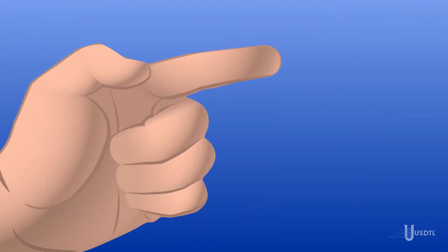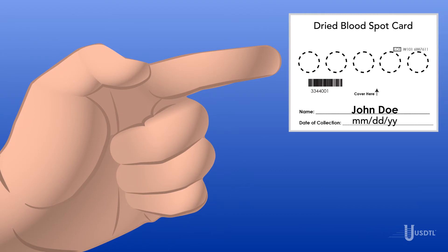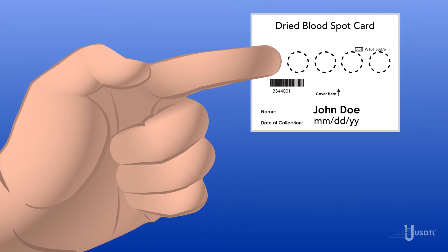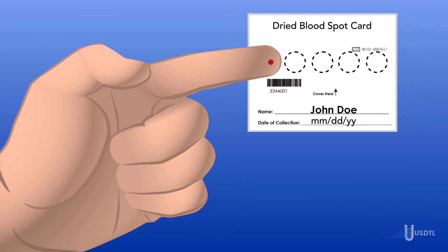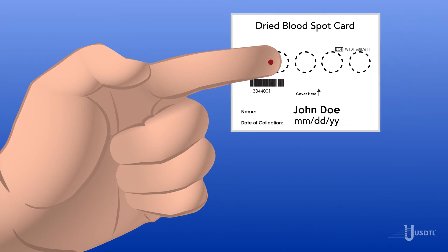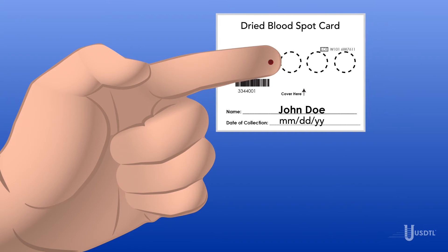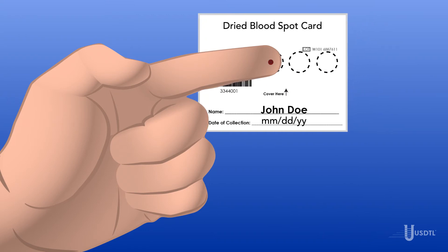Dried blood spot collection is simple and quick. It is donor collected using a lancet, similar to a blood sugar test, under observation by a collection professional right in the office.